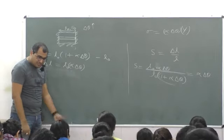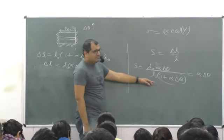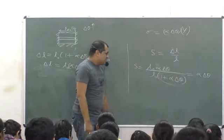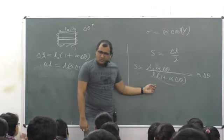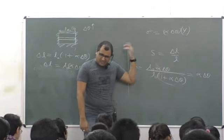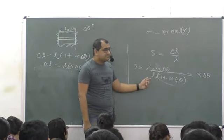This is the idea of thermal stress. Here people talk about L0(1 + alpha delta theta). Alpha delta theta is very small, and if you have to ignore it in the numerator and ignore it in the denominator, then it is absolutely first class allowed.